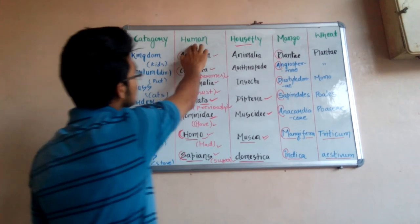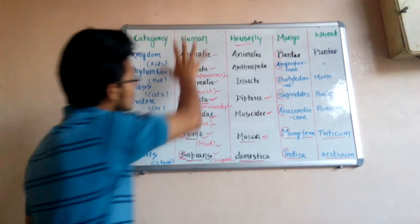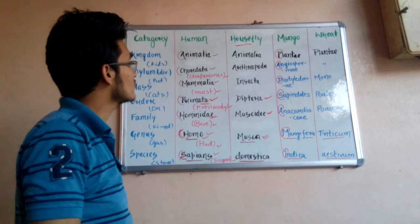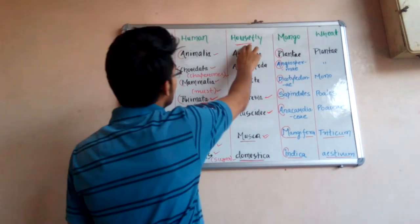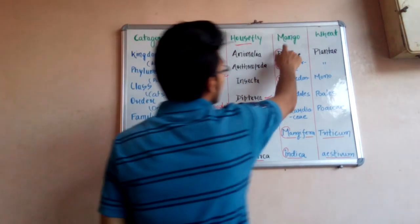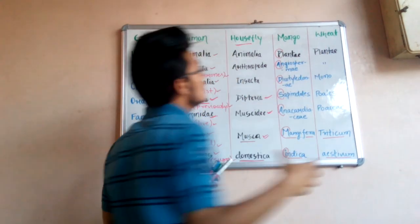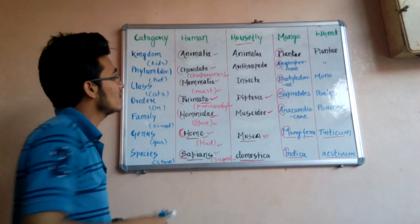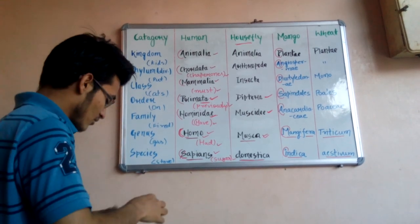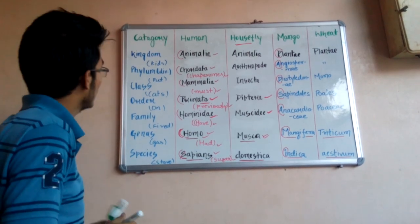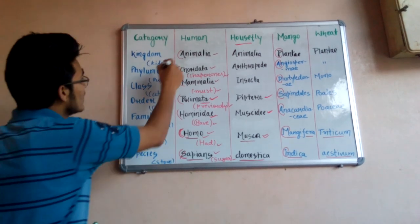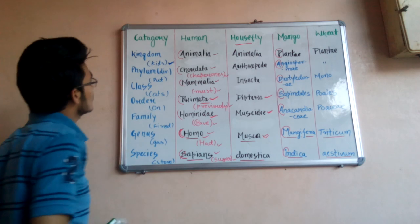On this particular topic, we have to memorize the taxonomical hierarchy for humans as well as mango, which is very important from an examination point of view. We will interrelate human and housefly with each other, and mango and wheat with each other, so that we can memorize these tricks easily. I have already covered the taxonomical hierarchy trick in a previous video, but I am going to explain it once more.